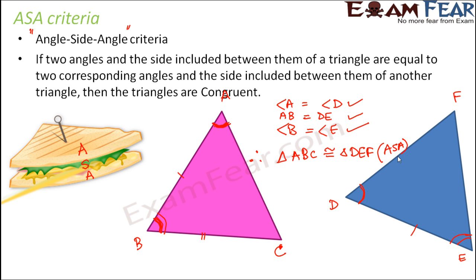So as per this criteria if two angles and the side included between them of a triangle are equal to two corresponding angles, the triangles are congruent. So I hope this concept is clear.